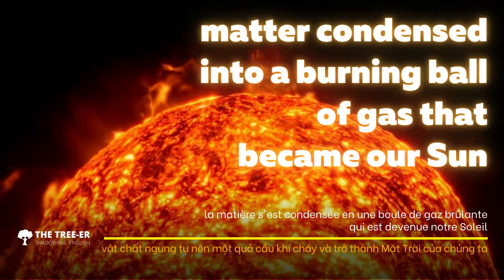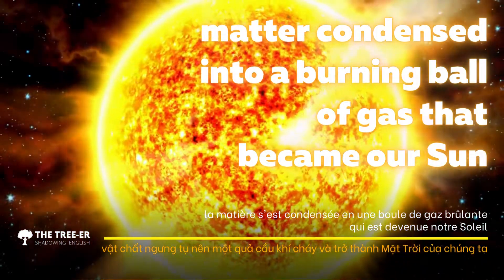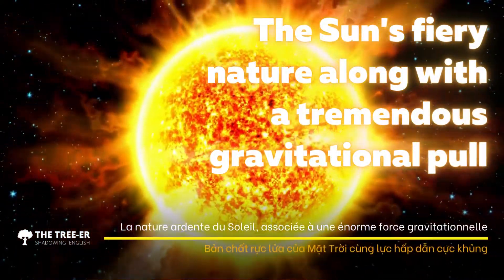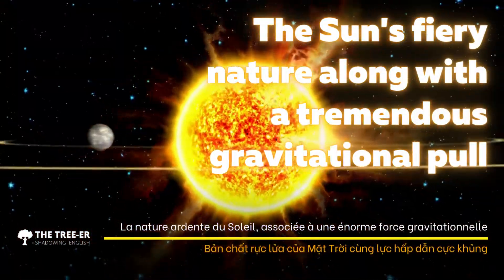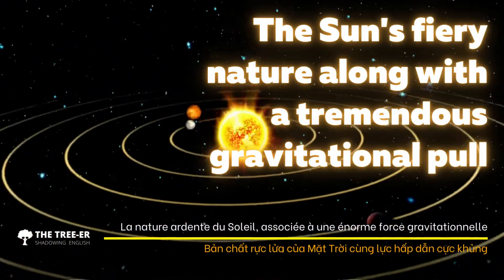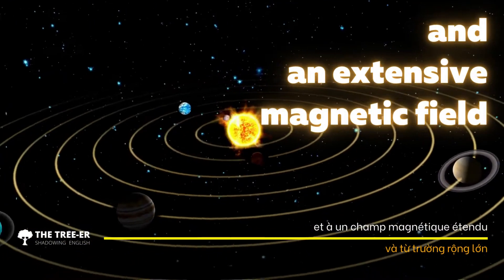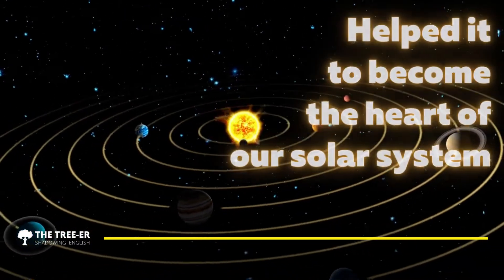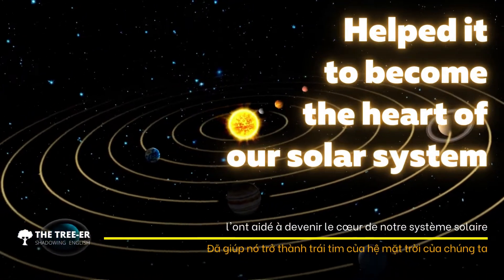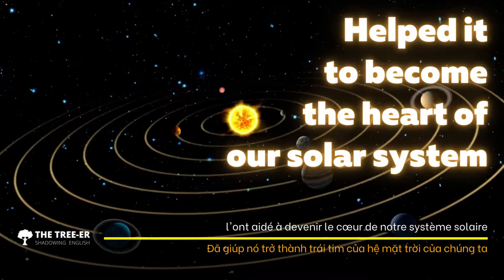That burning ball of gas became our Sun. The Sun's fiery nature, along with a tremendous gravitational pull and an extensive magnetic field, helped it to become the heart of our solar system.